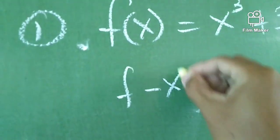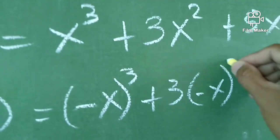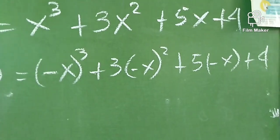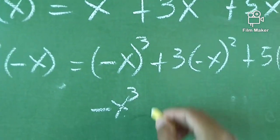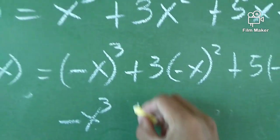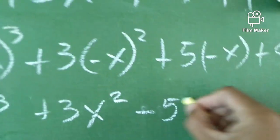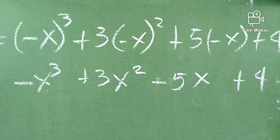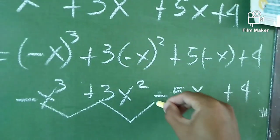Now, for the negative side, let's substitute negative x for all x. So we have f(-x) = (-x)³ + 3(-x)² + 5(-x) + 4. Let's simplify: negative x cubed stays negative, so -x³. Negative x squared becomes positive, so +3x². Positive 5 times negative x gives -5x. Plus 4. Now we can see changes of sign.